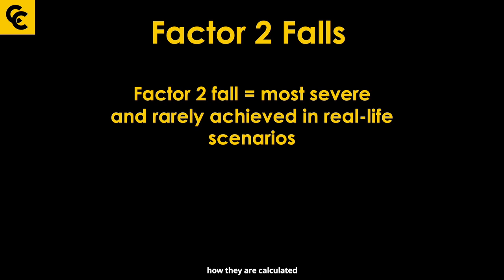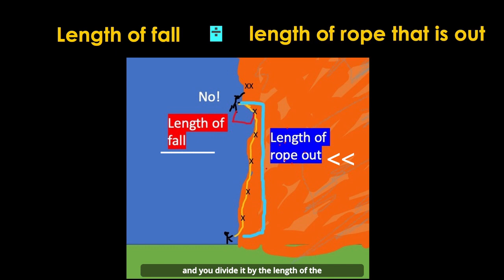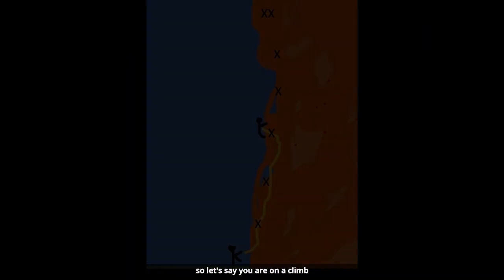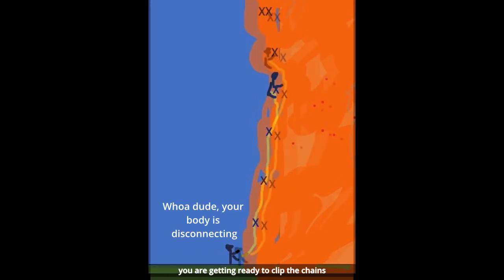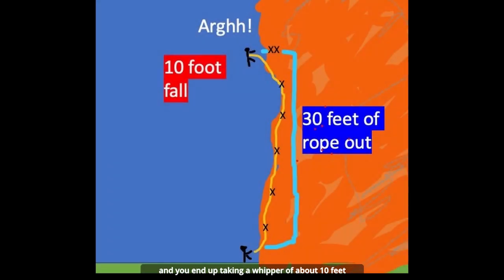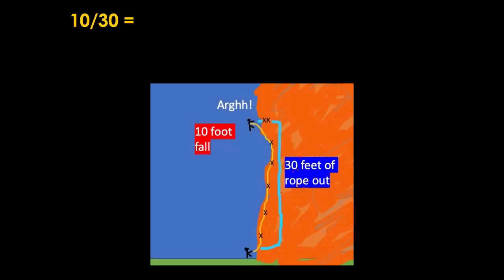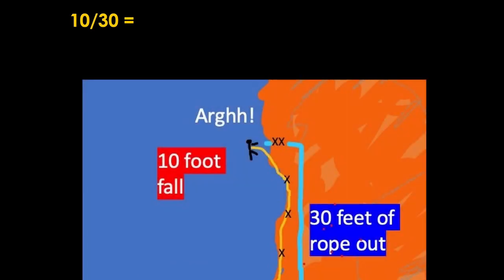Here's how fall factors are calculated, since you probably hear a lot about them. Basically, you take the length of the fall and divide it by the length of the rope that is out. So let's say you're on a climb and 30 feet of rope is out, and you take a whipper of about 10 feet. You divide 10 feet — the length of the fall — by 30 feet — the length of rope out — and your fall factor is 0.33.